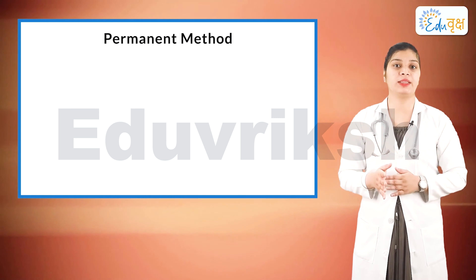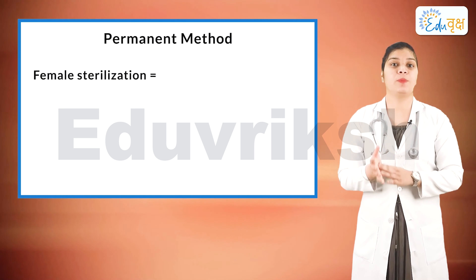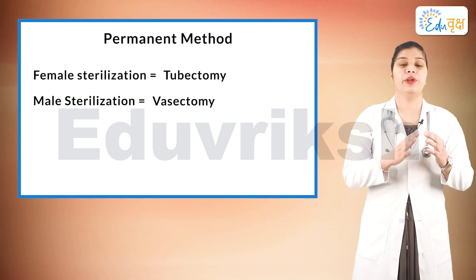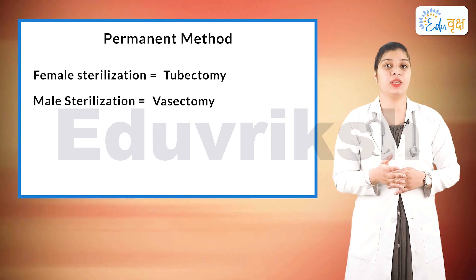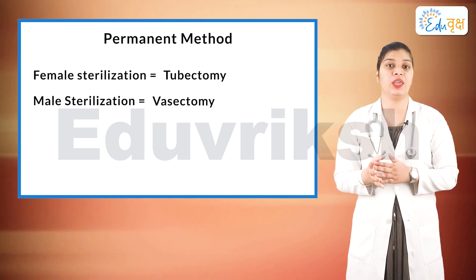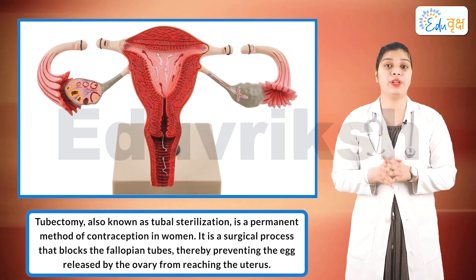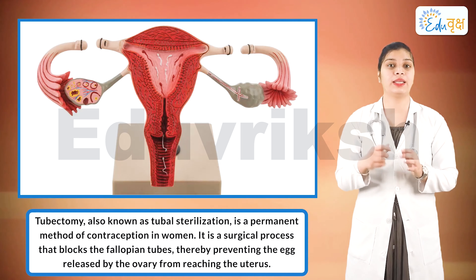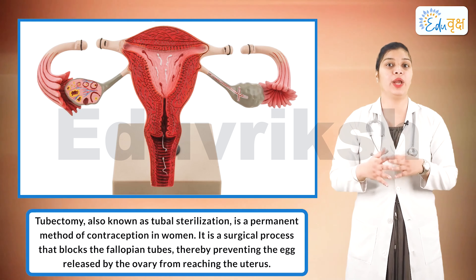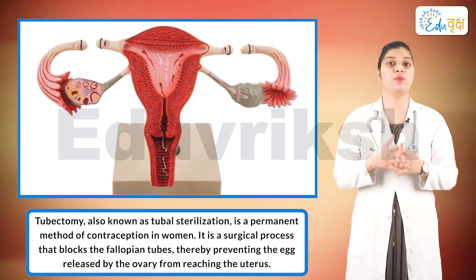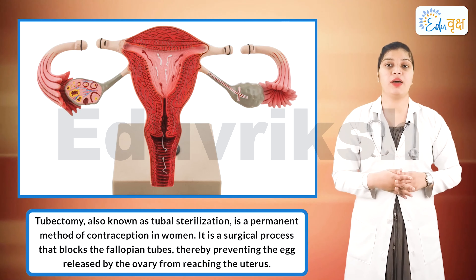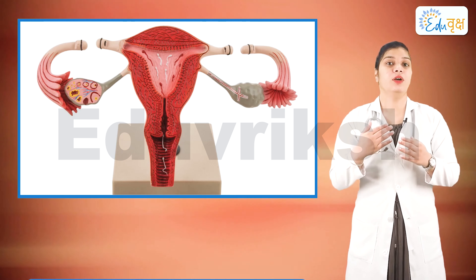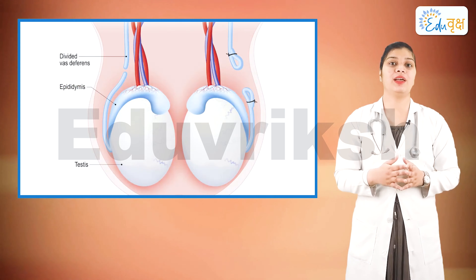Permanent methods include female sterilization, which is called tubectomy, and male sterilization, which is called vasectomy. In tubectomy, the female fallopian tubes are cut and ligated so that the egg produced in the ovaries does not reach the uterus and pregnancy does not occur. In vasectomy, the male vas deferens is ligated so that sperm ejaculation is prevented.